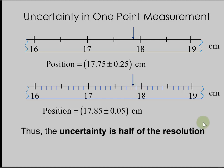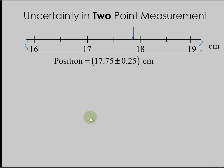Therefore, the uncertainty is always half the resolution. When we are measuring the length of something, it involves making two-point measurements. In this case, we already know the position of this black arrow.